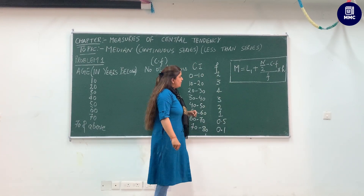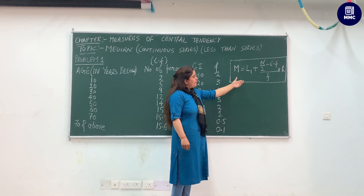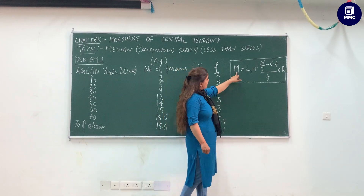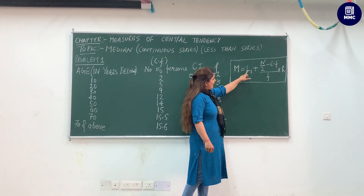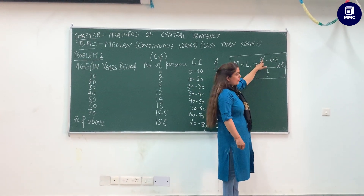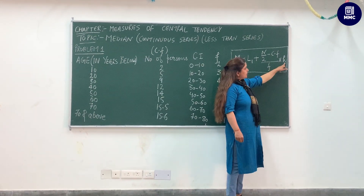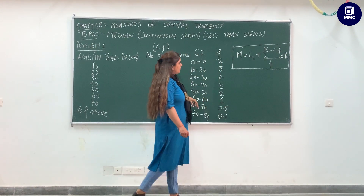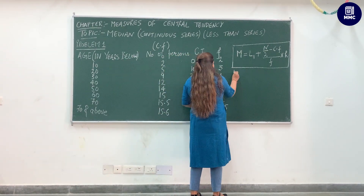As a beginner you may find this complex, but with practice it gets easier. The formula notation is capital M. L1 is the lower class boundary, n is the summation of frequency, CF is cumulative frequency, f is frequency, and h is the class size.